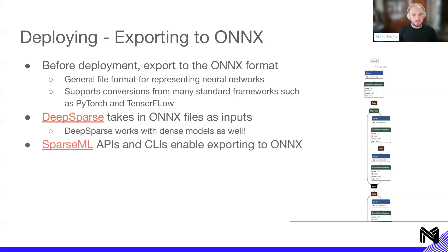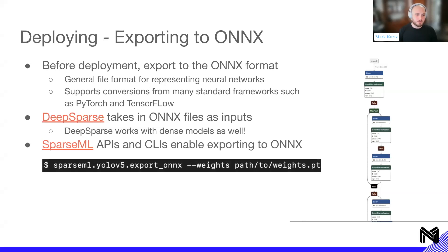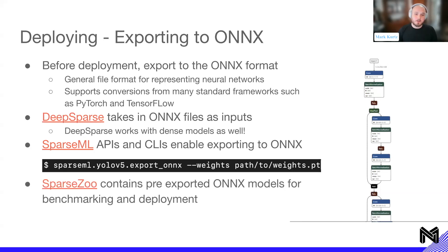SparseML has APIs and CLIs for exporting to ONNX — built on top of Ultralytics. You do sparseml.yolov5.export.onnx and give it the path to the weights you've trained, and it exports an ONNX model ready for deployment. Additionally, SparseZoo contains pre-exported ONNX models for benchmarking and deployment. If you're deploying on COCO right now, you can take those models off the shelf straight from SparseZoo and move directly into deployment, getting all the performance benefits without any additional effort.